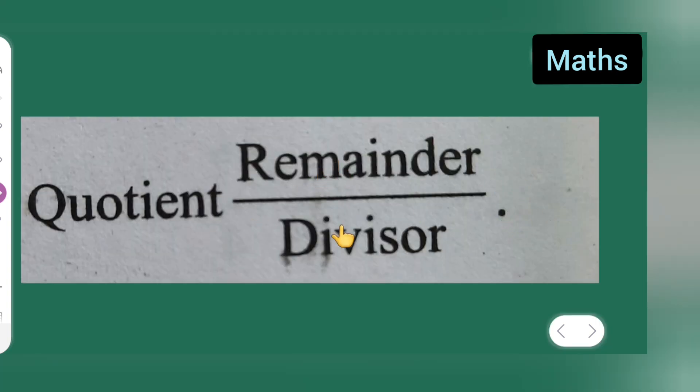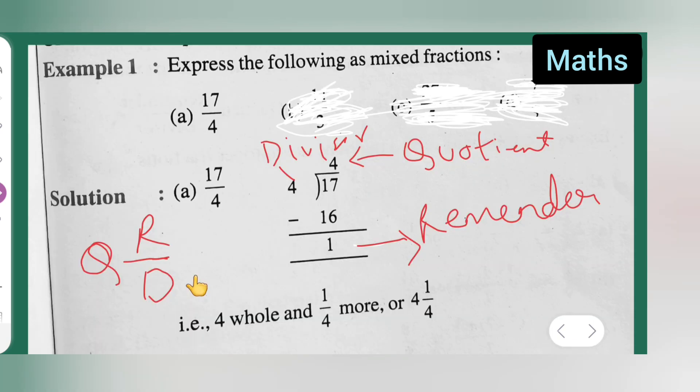Quotient, remainder upon divisor. So here, your divisor is this, quotient is this and remainder is this.